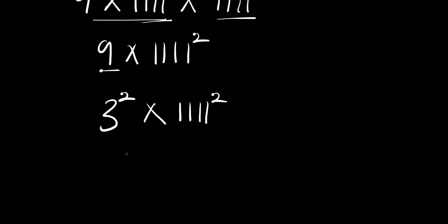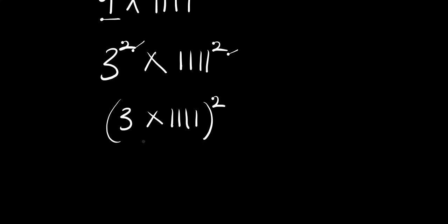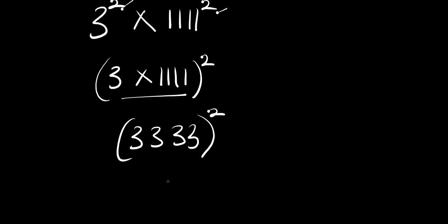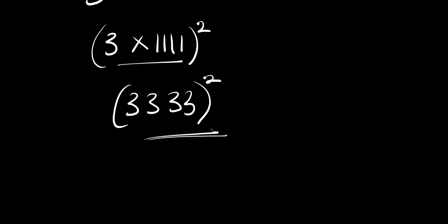So we can rewrite this as 3 times 1111, all raised to the power of two, because the exponent is common. Once we multiply this out we are going to have 3333 raised to the power of two. So when we find the value of 3333 squared, that will become our answer.